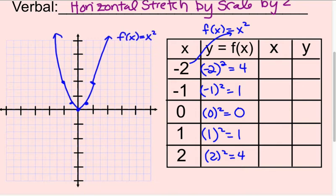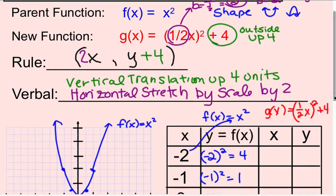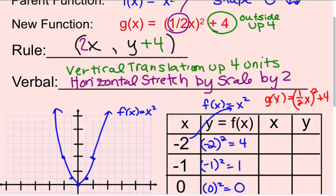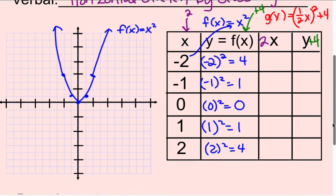What we want to do next is graph the new function with the transformations. We're graphing the function g(x) equals (1/2 x) squared plus 4. Now for you to remember, we have to multiply all the x's by 2. So we're 2x-ing it, and we're going to add 4 to all of the y's. Let's take care of the x's first.